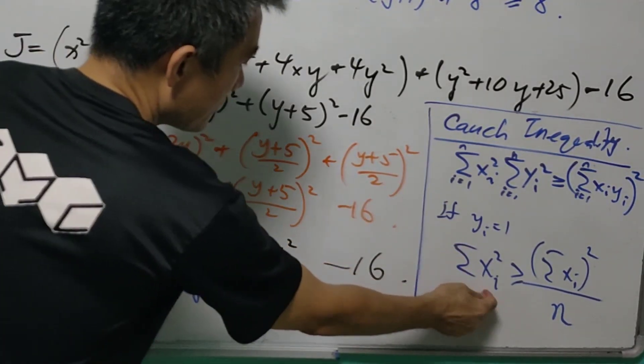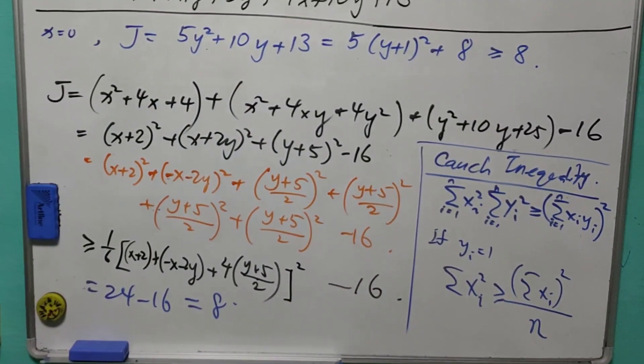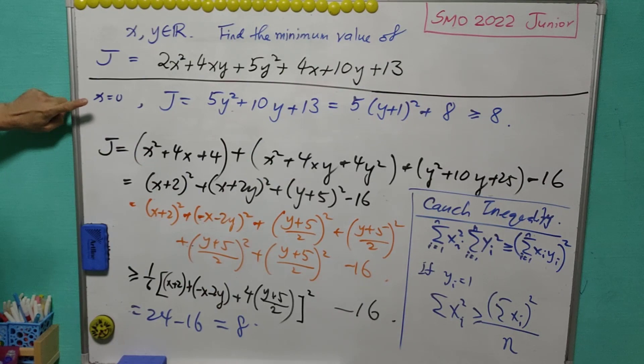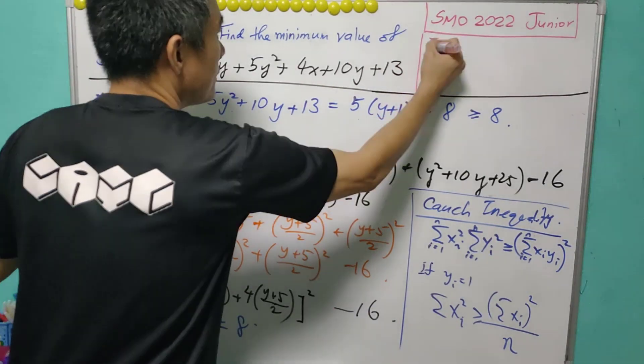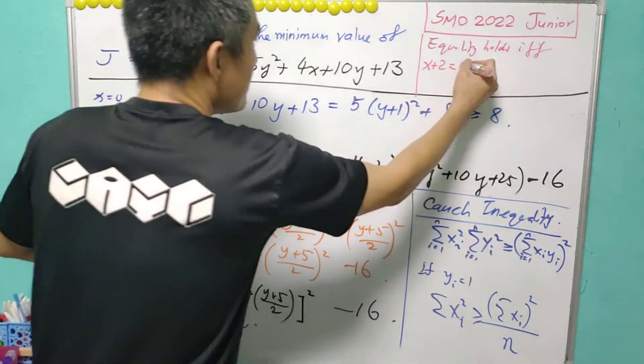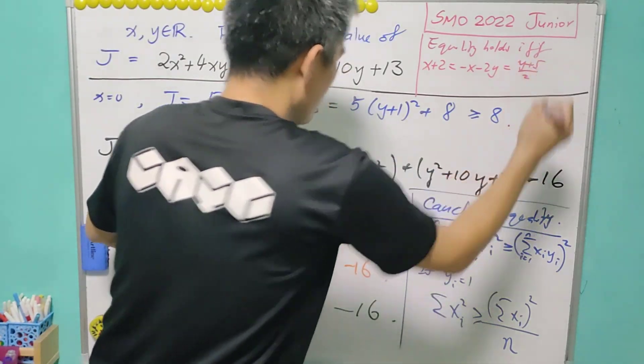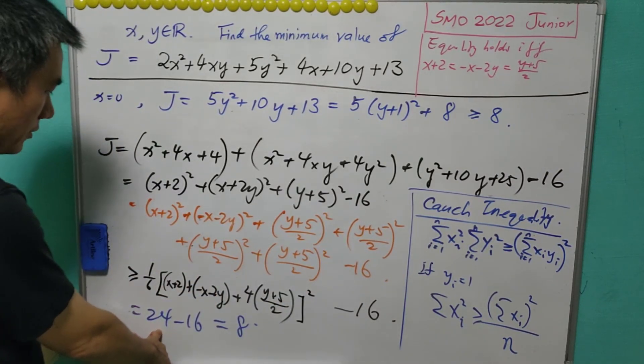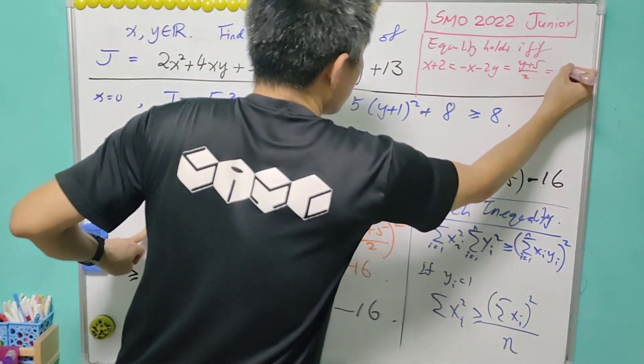I forgot to mention that for the result here, the equality holds, if and only if, each of the xi the same. So go back to this. Are we able to get 8? Yes, from the example that we show. But we also want to do the calculation based on the result. Let me write it here. Equality holds, if and only if, x plus 2 equals to negative x minus 2y equals to y plus 5 over 2. And because the sum of this is equals to 24, so each of these must be equal to a 4. Take the square root. Each of these must be equal to 2.